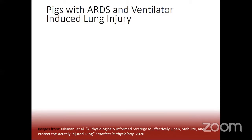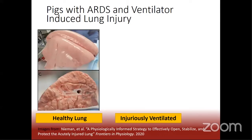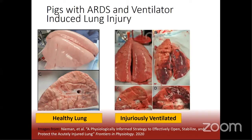If you're a little queasy, look away for a few seconds. Here's an example of what a healthy lung looks like — this is a pig lung that's been inflated and tied off. You see nice healthy tissue and a foamy substance: surfactant. Compared to a lung that has been ventilated safely — shown in A and C — the lung in B and D has not been ventilated safely.